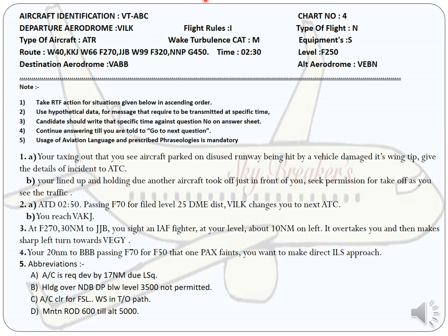Here is one model question. I'm going to explain the entire thing. When you go for the exam, you will be given the format like this. The first item is the aircraft identification — here I've given Victor Tango Alpha Bravo Charlie. The departure aerodrome is Lucknow and the destination aerodrome is Mumbai. The type of aircraft is given — we have different types such as Boeing, Airbus, and Embraer.